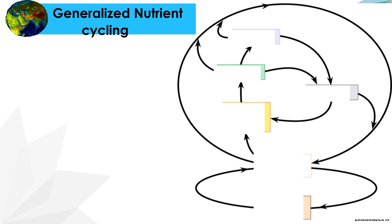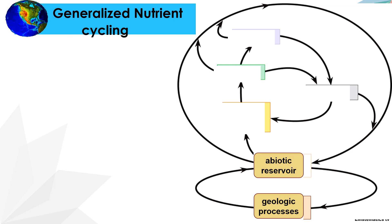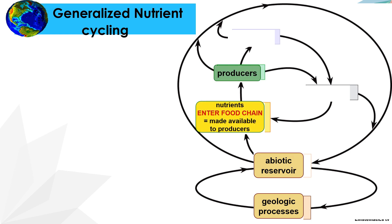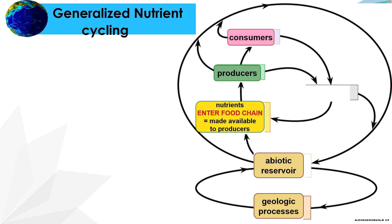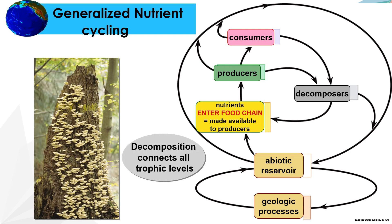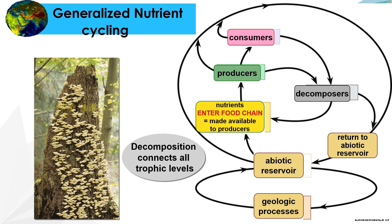Let us look at a generalized nutrient cycling. It starts with the abiotic reservoir — specifically the soil, water, or air — and this is cycled using geologic processes. The nutrients enter the food chain, made available by producers. Producers are consumed by consumers, and both consumers and producers are consumed by decomposers. Eventually, decomposition connects all trophic levels and materials return to the abiotic reservoir.